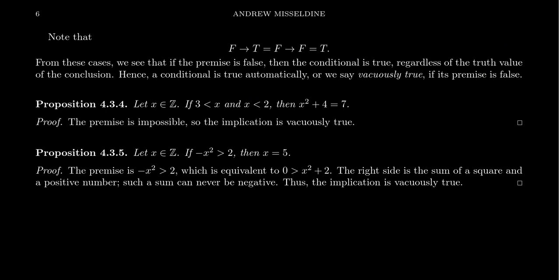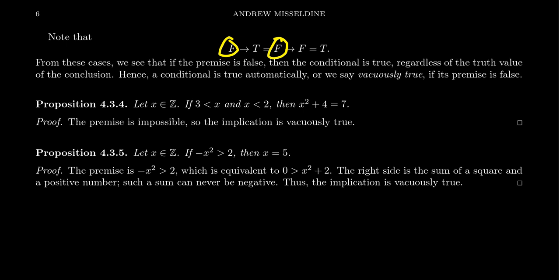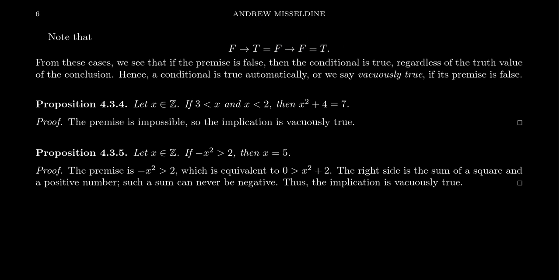On the flip side, consider the cases where the hypothesis is always false. If the hypothesis is false, the conclusion statement has no obligations — it could be true or false. This is what we mean by something being vacuously true: vacuous because the premise is false. You can put any ridiculous premise you want — if it's false, your conclusion could be anything and the conditional will be true, vacuously speaking.